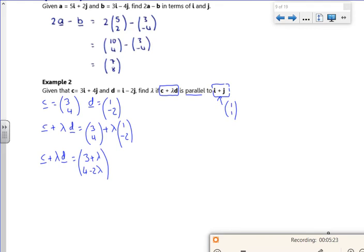Now, it's going to be parallel to (1, 1). But it's going to be a multiple of it. So we're going to have it equal to a multiple of it. So I'm going to put it equal to k lots of (1, 1). So k is just a constant.